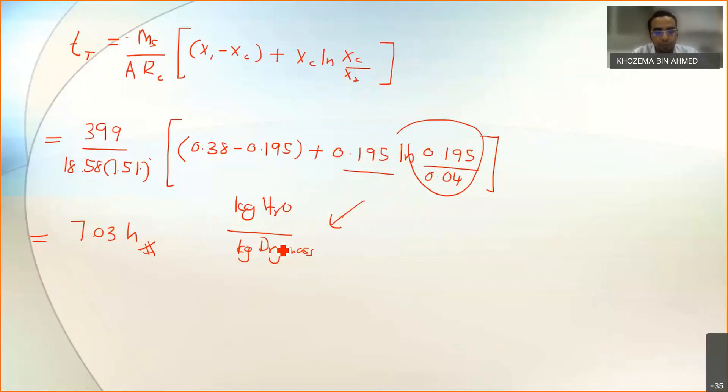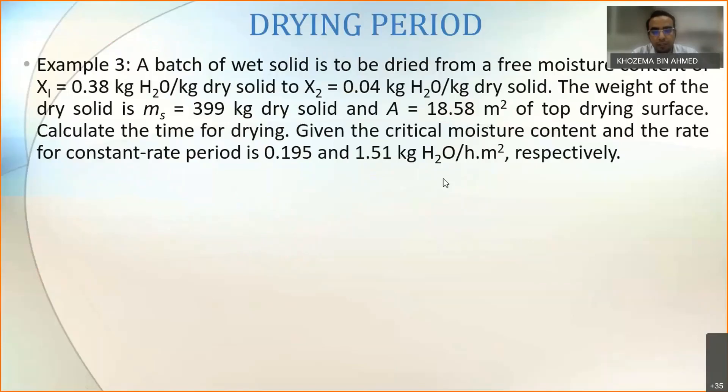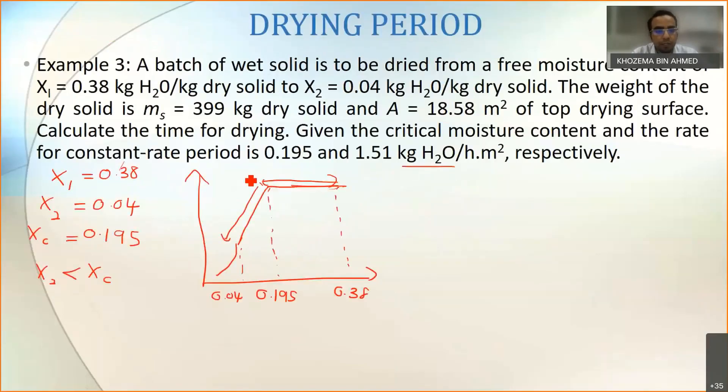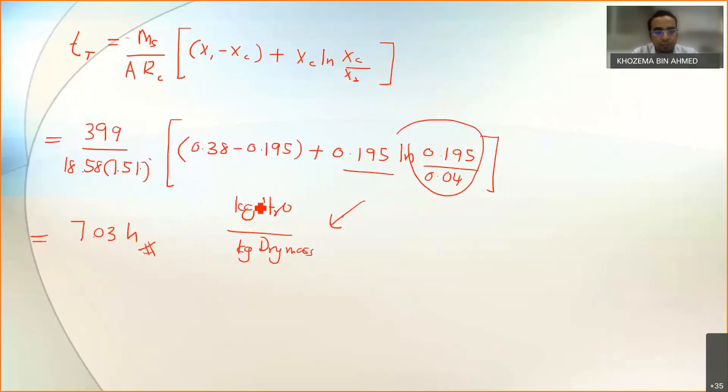So when you do your unit cancellation, kg of H2O plus the kg of dry mass. You know that 399 is kg of dry mass. In here your rate is actually kg H2O and then you can cancel out kg H2O and kg dry mass based on the unit for this one and the unit for this one.